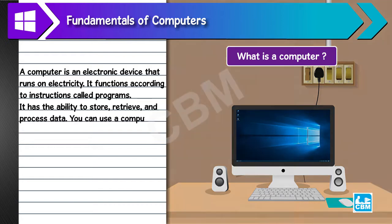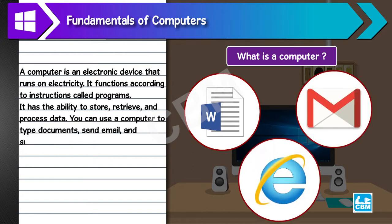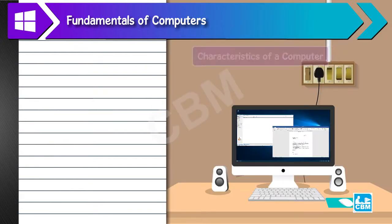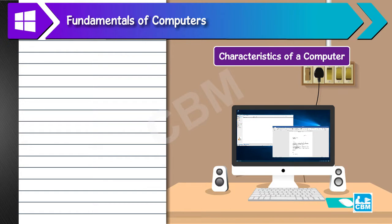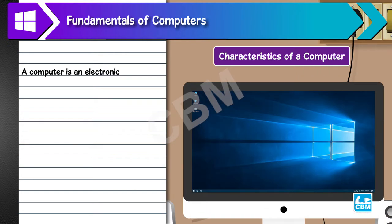You can use a computer to type documents, send email, and surf the internet. Characteristics of a computer: A computer is an electronic device that can perform several tasks at a time, which is called multitasking.